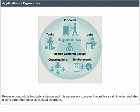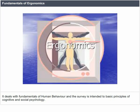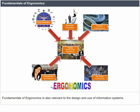Proper ergonomics is essentially a design discipline necessary to prevent repetitive strain injuries and to aid in curing other musculoskeletal disorders. If those disorders are not treated, they can develop over time and lead to long-term disability. Fundamentals of Ergonomics deals with human behavior and the basic principles of cognitive and socio-psychology, and is also relevant to the design and use of information systems.